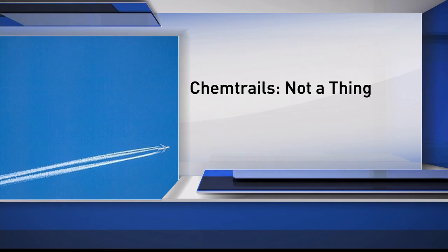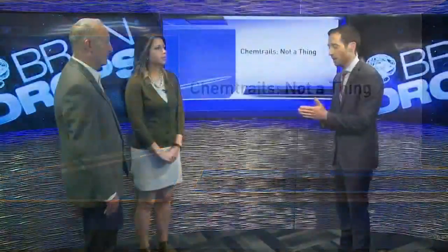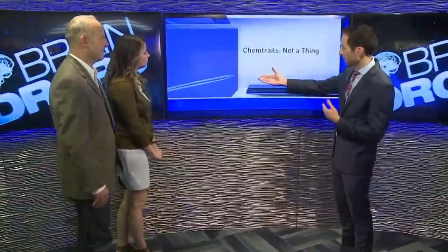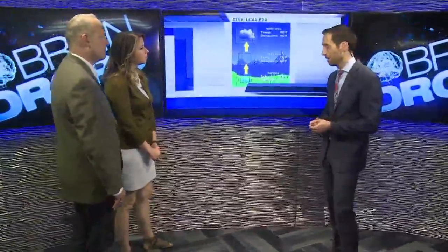So let's talk about what a chemtrail is — first of all, what people believe it is. They believe that coming from a plane, what you see there in that kind of picture, is the government spraying either a chemical or some sort of substance down onto people. So that's the premise behind the chemtrail idea.